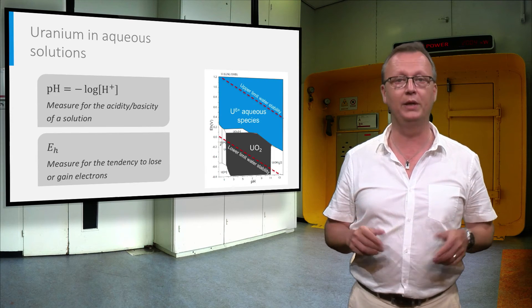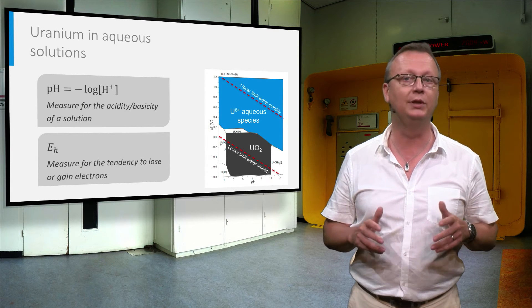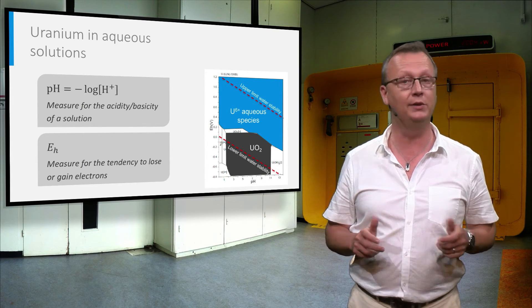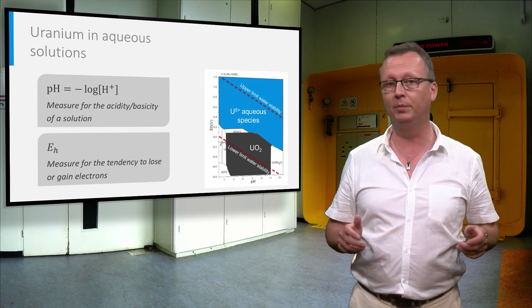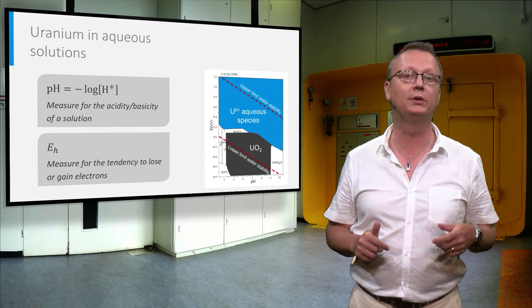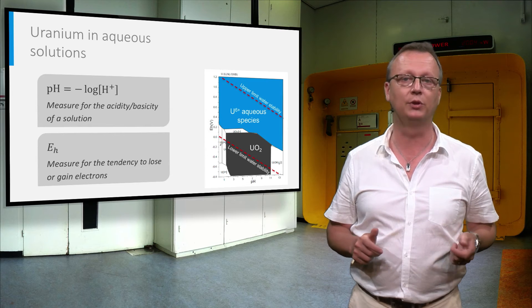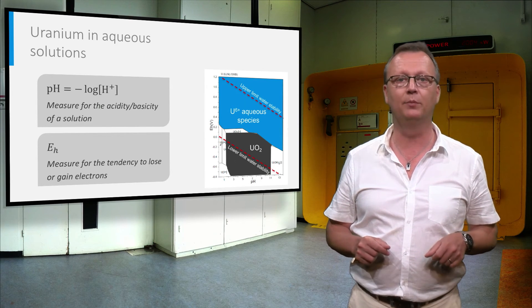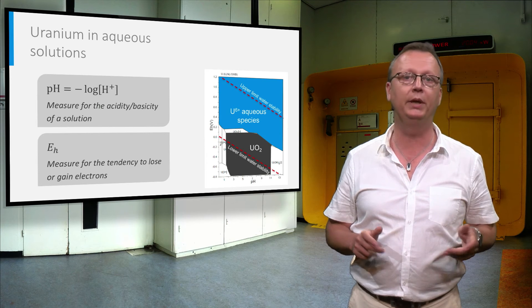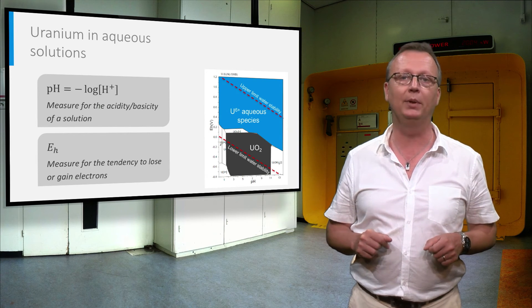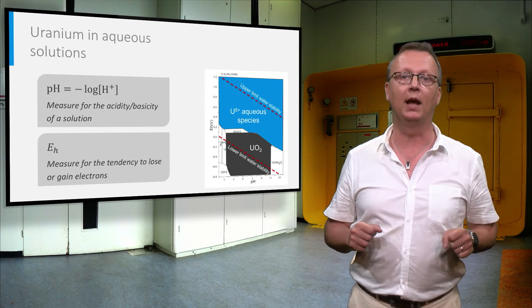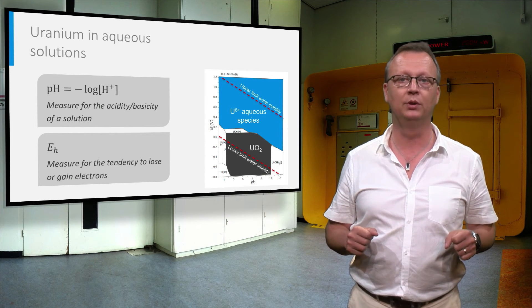The valence state of uranium also has an impact on the dissolution behavior. The tetravalent uranium compounds are very insoluble, and UO2 can only be brought into solution with extremely strong acids, such as concentrated nitric acid. This solubility can be well demonstrated by a so-called EH-pH diagram that shows the stability domains as a function of the acidity, the pH, and the electron affinity of the solution, the EH.